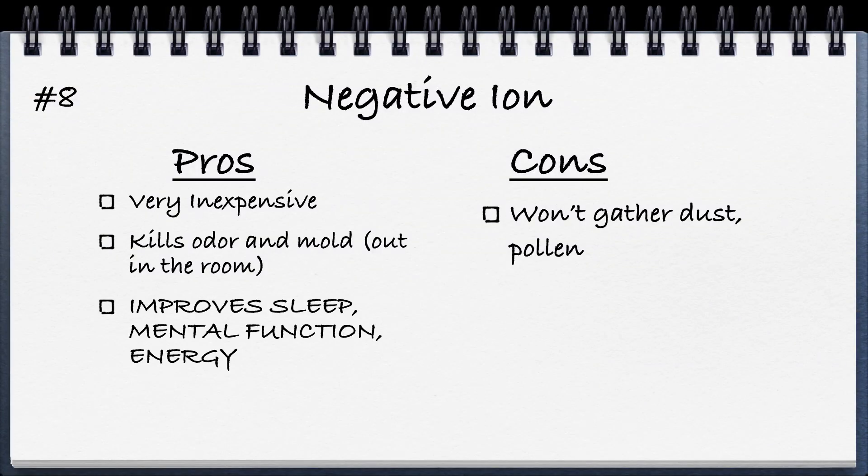Next is negative ion, which I love. Pros: very inexpensive; kills odor and mold; improves sleep, mental function, and energy — it's actually really good for the body. Negative ions are found in high levels in nature — near waterfalls, the ocean, and forests. If you're indoors a lot with windows closed, the air gets depleted of negative ions. Usually positioned after the fan so it goes out into the room. Also good for pets. Cons: won't gather dust or pollen; it's more about health and odor control.